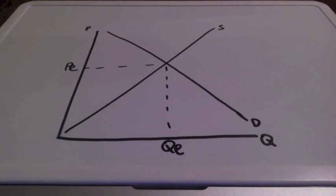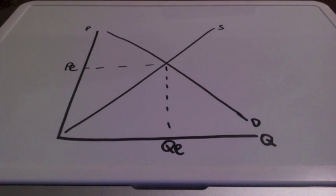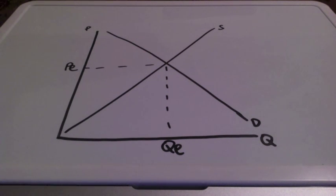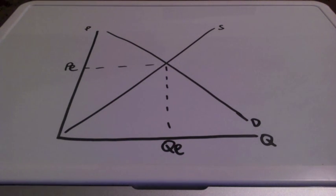In this lesson, we are going to discuss the difference between consumer and producer surplus. Consumer surplus is the monetary gain obtained by consumers because they are able to purchase a product for a price that is less than the highest price they would be willing to pay.